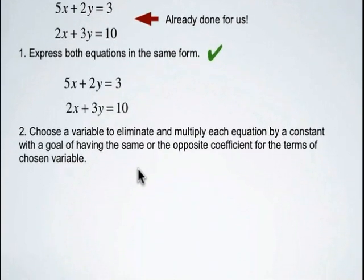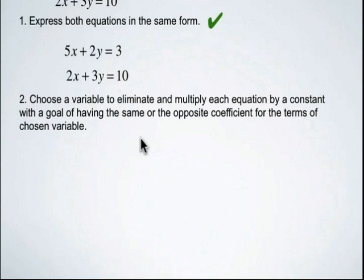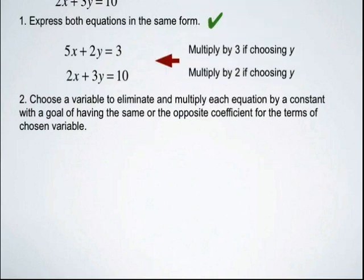Now we have to eliminate one of our two variables by multiplying each equation by a constant, in order to get the same coefficient or the opposite coefficient for our chosen variable. We're going to multiply both sides of the first equation by three and both sides of the second equation by two, because we're going to eliminate y.